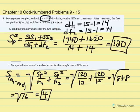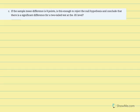Part C asks us to calculate our t statistic and draw conclusions regarding the null. If the sample mean difference is equal to 8 points, is this enough to reject the null hypothesis and conclude there's a significant difference for a two-tailed test at the 0.05 level? We're conducting a t-test for independent sample means. Two different samples were exposed to two different treatments, and we want to determine if the difference is large enough to say it's due to treatment and not sampling error or chance.